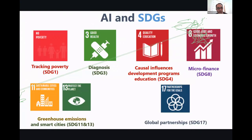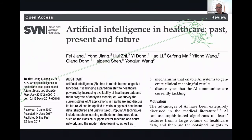AI is already contributing to around six SDGs. It is being used to detect and address poverty under SDG 1, for diagnosis, treatment, and surveillance of diseases under SDG 3, for quality of education under SDG 4, for microfinance and greenhouse emissions, and for smart cities. AI is one of the main pillars converging knowledge and technology for societal benefit at a global scale under SDG 17.